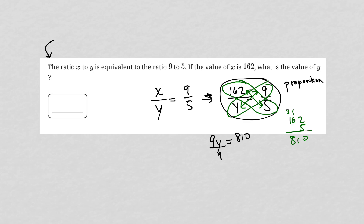Then we divide both sides by 9. I'll show you my work: 810 divided by 9 gives us 90. So the correct answer to this question is 90.